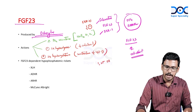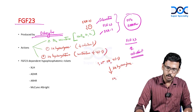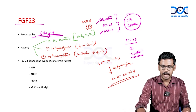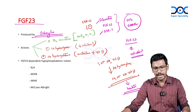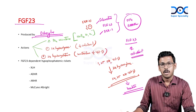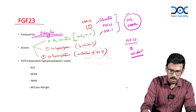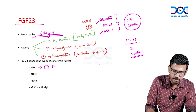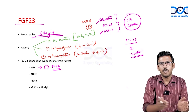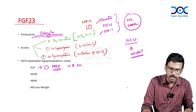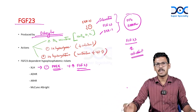24,25-dihydroxyvitamin D is the inactive form produced via 24-hydroxylation of 1,25-dihydroxyvitamin D. This is the major mechanism converting the active form of vitamin D to the inactive form. Regarding XLH: it is due to inactivating mutation of the PHEX gene. This causes defective sensing of phosphorus by osteocytes, leading to increased FGF23, which drives excessive phosphorus out of the body, resulting in hypophosphatemia.